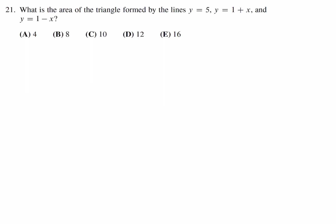What is the area of the triangle formed by the lines y equals 5, y equals 1 plus x, and y equals 1 minus x?